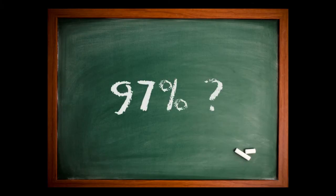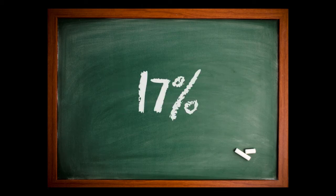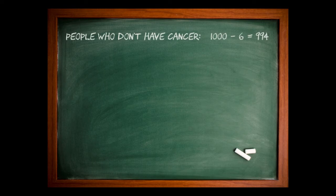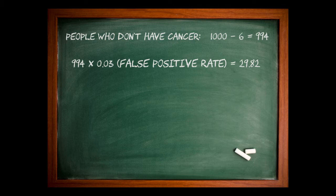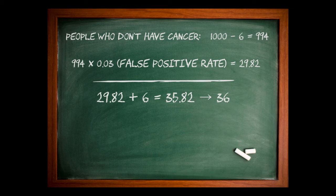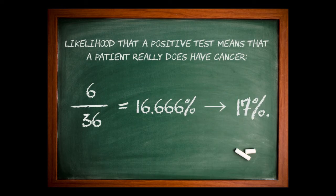Many people would say 97%, but the correct answer is more like 17%. So we would take 994 people who don't have cancer, times by 0.03, the false positive rate, and get just under 30. Then we take the 6 people who actually have and are correctly diagnosed with cancer, and we add that to 30. We get 36. Six people out of the 36 is just under 17%. This is counterintuitive, but it's true.